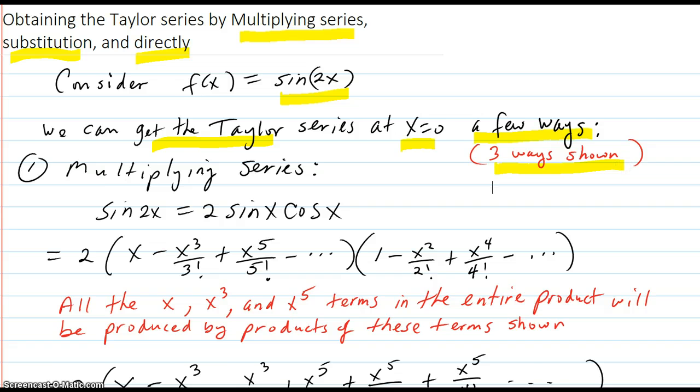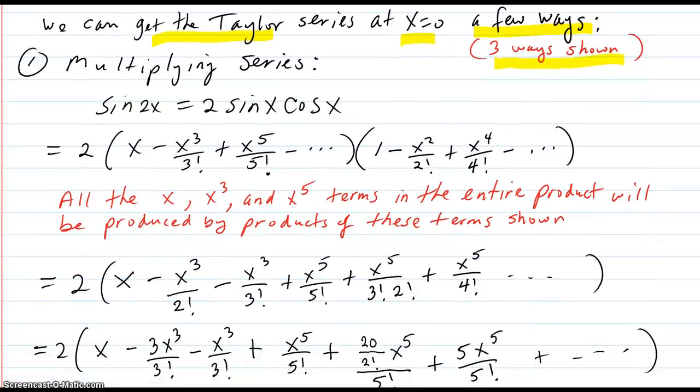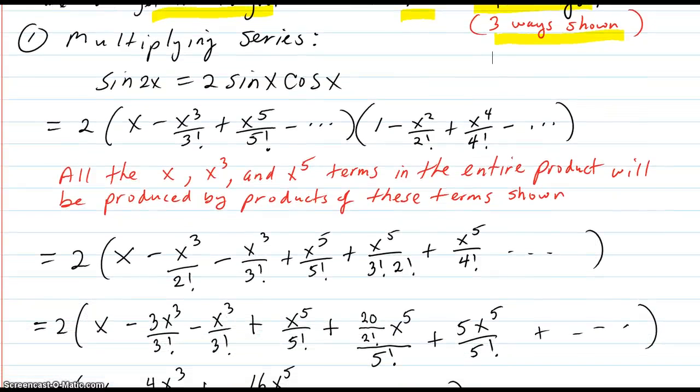Number one, not in any order of easiness. Number one, multiplying the series. Okay, so sin(2x) is 2sin(x)cos(x). So that's two times the sin(x) times the cos(x).